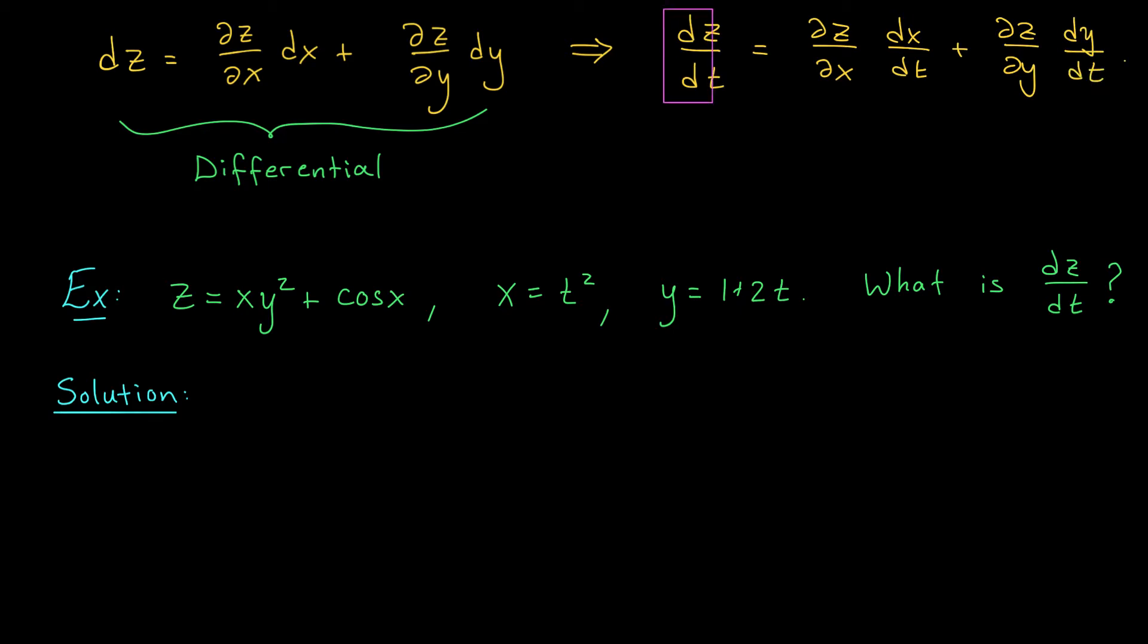Ah, now that is pretty cool. What it's telling me is that if I want to know dz over dt, I should calculate the partial derivatives of z with respect to x and y. I should differentiate x and y with respect to t and put them together in this way. This rule, by the way, is called the chain rule for paths.